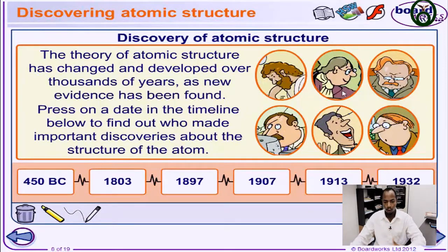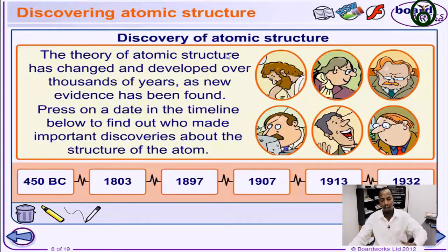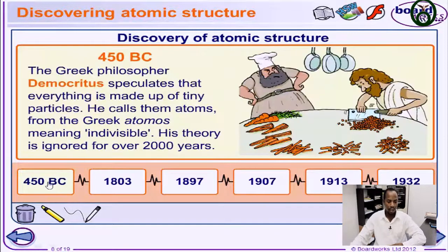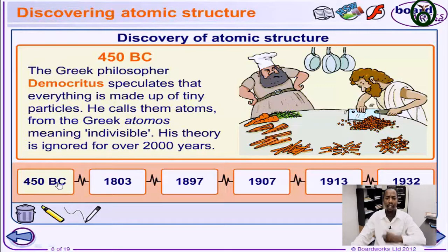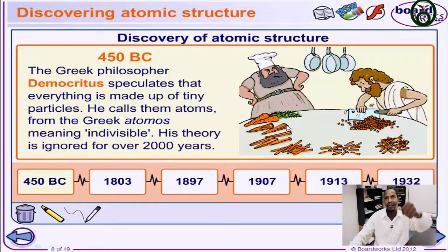Now we take a look at a quick history of the discovery of the atomic structure — those who contributed to what we are enjoying today, including electricity and so many other things. First of all, in 450 BC, there was a Greek philosopher called Democritus. He speculated that everything is made up of tiny particles, which he called 'atomos' — from the Greek word. From as far back as 450 BC, atoms had been named.